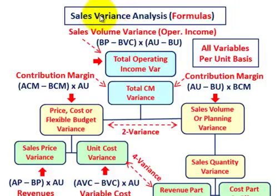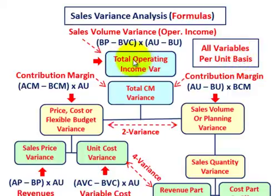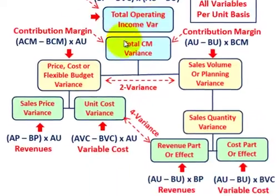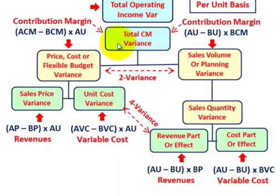To summarize the table and formulas for sales variance analysis: the total operating income variance, or sales volume variance for operating income, is (budgeted price minus budgeted variable cost per unit) times (actual units sold minus budgeted units sold). The total contribution margin variance breaks down into the price/cost variance and the sales volume variance for contribution margin.